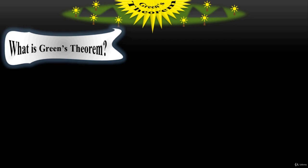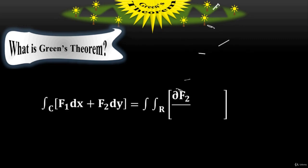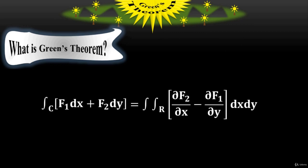The formula of Green's theorem is here, where the single line integration equals the double surface integration. On the left side, C stands for the curve — the boundary of an object, the outermost line of an object.